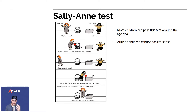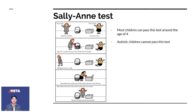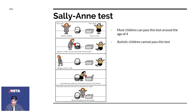The test goes like this. You tell a child a story: there's a person called Sally and Sally has a basket. There's another person called Annie and Annie has a box. Sally has a marble and she puts the marble into her basket.